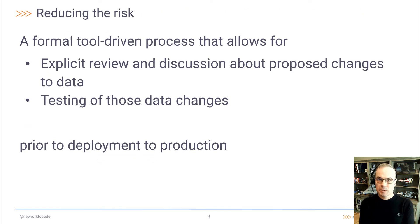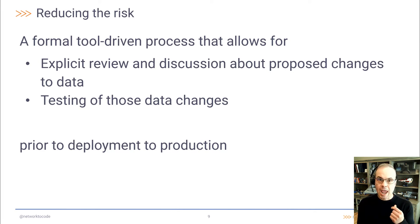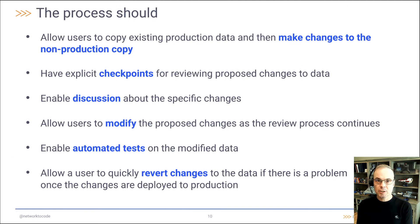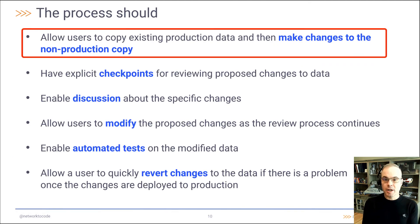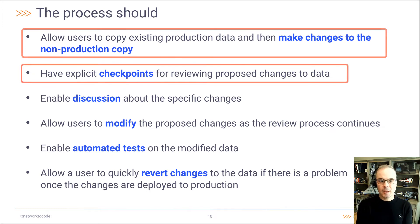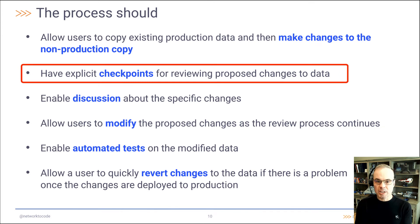We can reduce the risk with a formal tool-driven process that allows for explicit review and discussion about the proposed changes. And it should also allow testing of those proposed changes prior to those changes being pushed into your production environment. This process should allow users to copy existing production data and make changes to the non-production copy. It should have explicit checkpoints for reviewing proposed changes to the data.